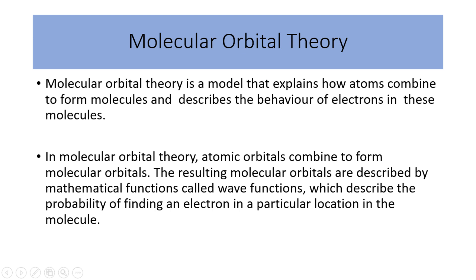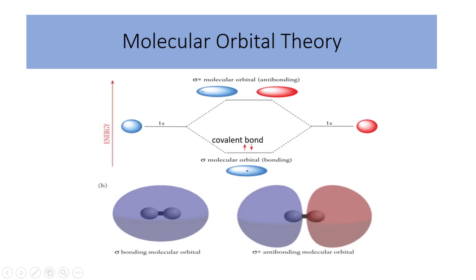Molecular orbital theory is a model that explains how atoms combine to form molecules and describes the behavior of electrons in these molecules. In molecular orbital theory, atomic orbitals combine to form molecular orbitals. The resulting molecular orbitals are described by mathematical functions called wave functions, representing the probability of finding an electron in a particular location in the molecule. Molecular orbitals can be either bonding or antibonding, depending on the phase and energy relationship between the combining atomic orbitals.